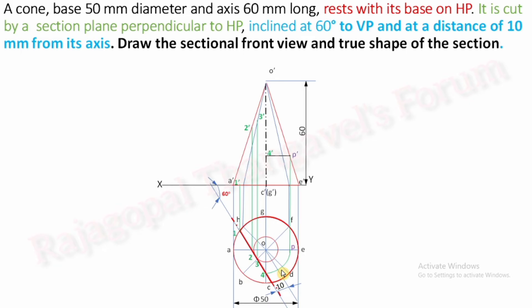The final cutting point of the section plane is between C and D. Make it 5 and extend a vertical projector. C dash and D dash are located in the front view — the meeting point between them is 5 dash. Now join 1 dash, 2 dash, 3 dash, 4 dash, 5 dash. Do not use a scale, as this is a smooth curved surface.